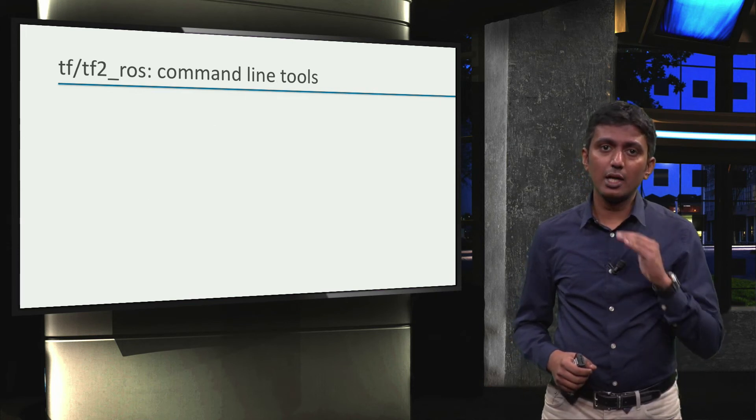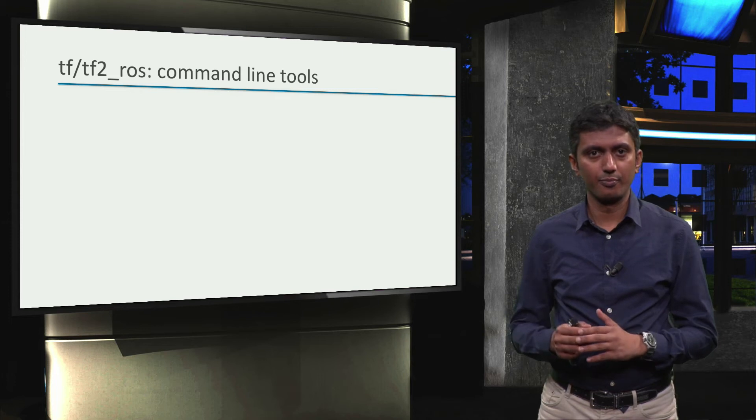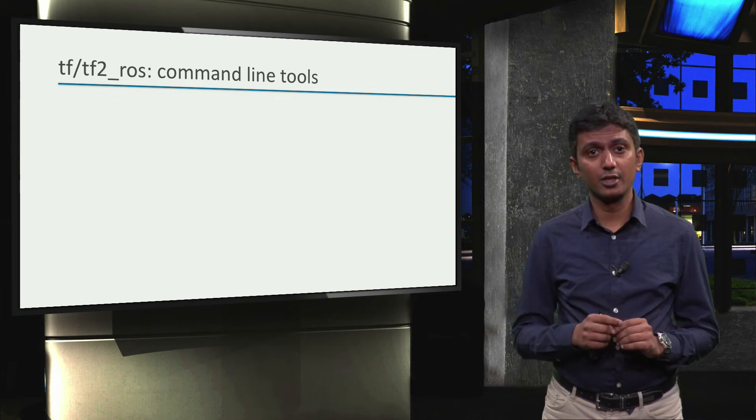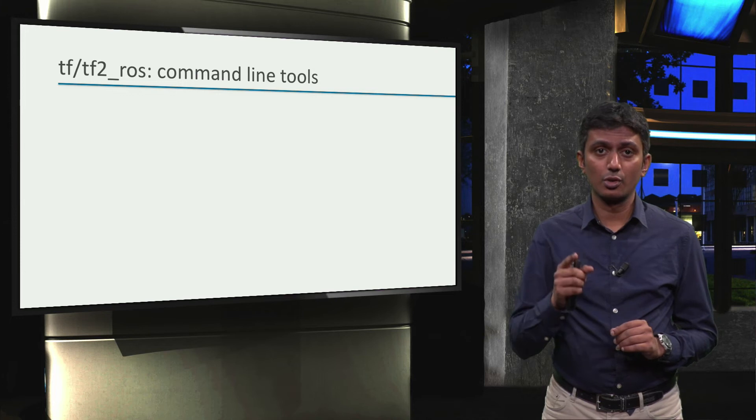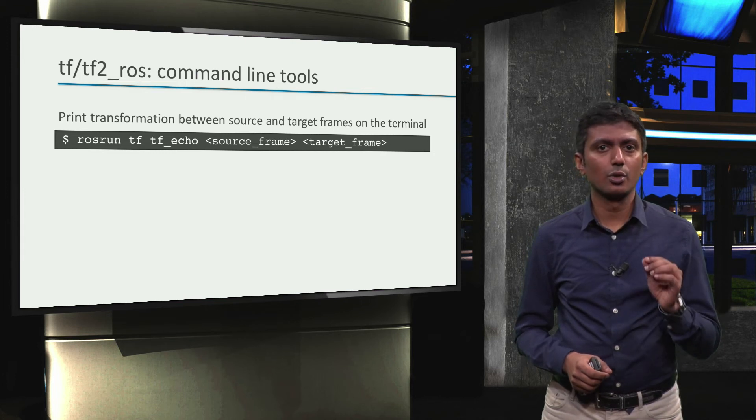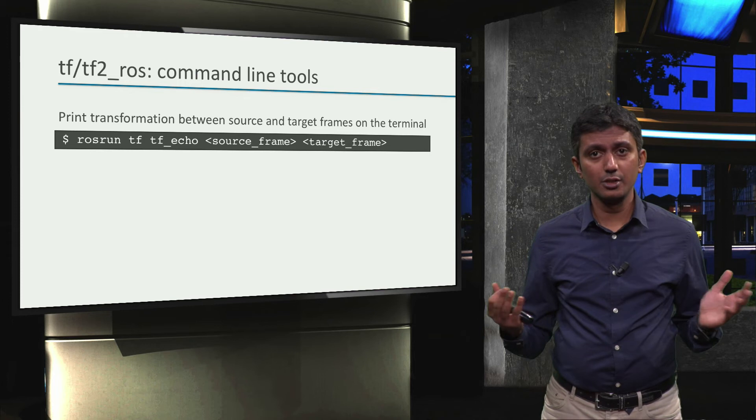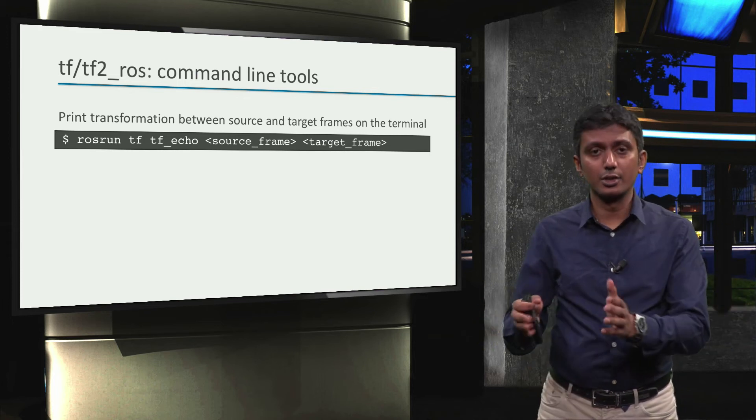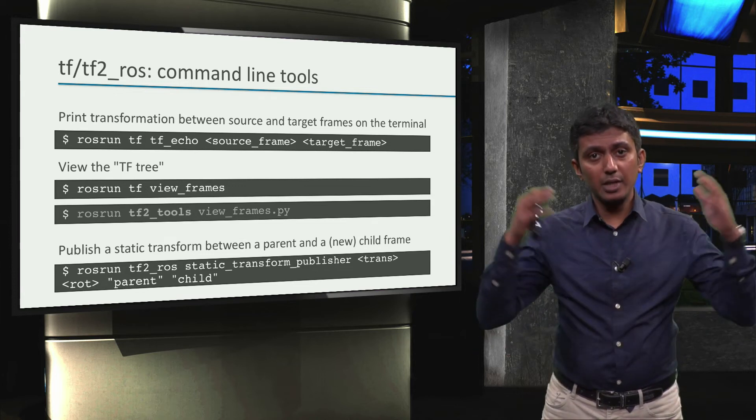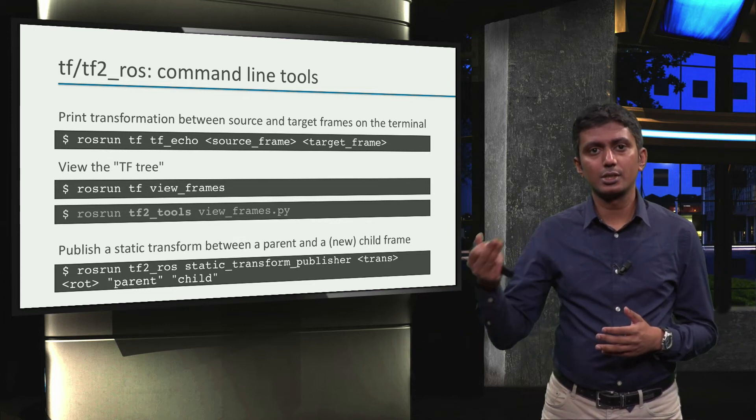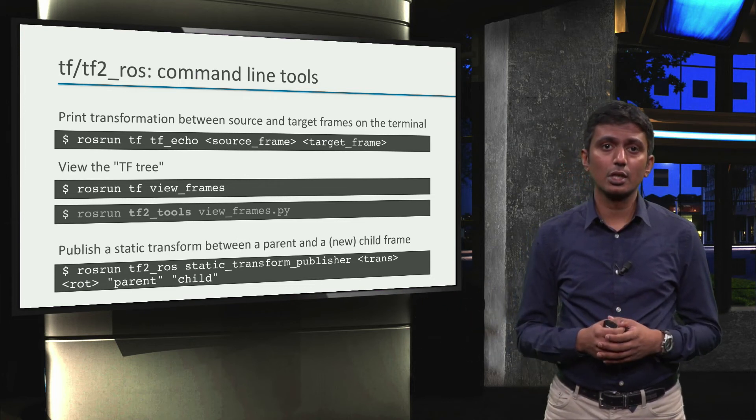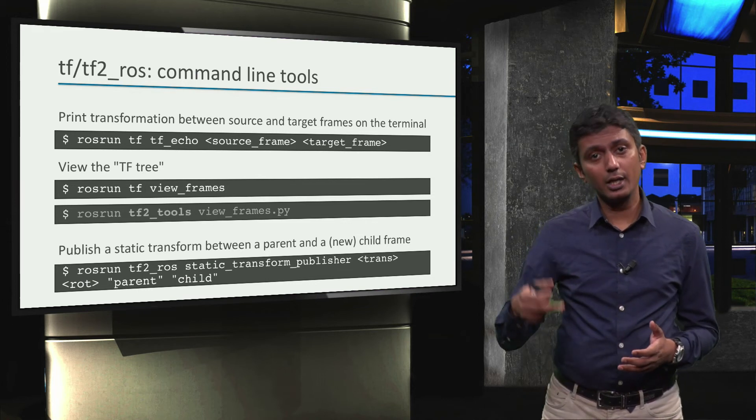Note that only for the command line tools, we will use tf instead of tf2, but the functionality is pretty much the same in both cases. We will definitely explore the main benefit of tf2 with the buffer when we learn the tf2_ROS code API in the following videos. The first tool we will learn about is the tf_echo tool, which prints the transformation between a source and a target frame on the terminal. The two other tools we will learn are the view_frames tool to view the complete tf tree and static_transform_publisher to publish a static transform between a parent and a possibly new child frame. These two tools are more fun to explore in a code illustration, so we will do that in the next video.